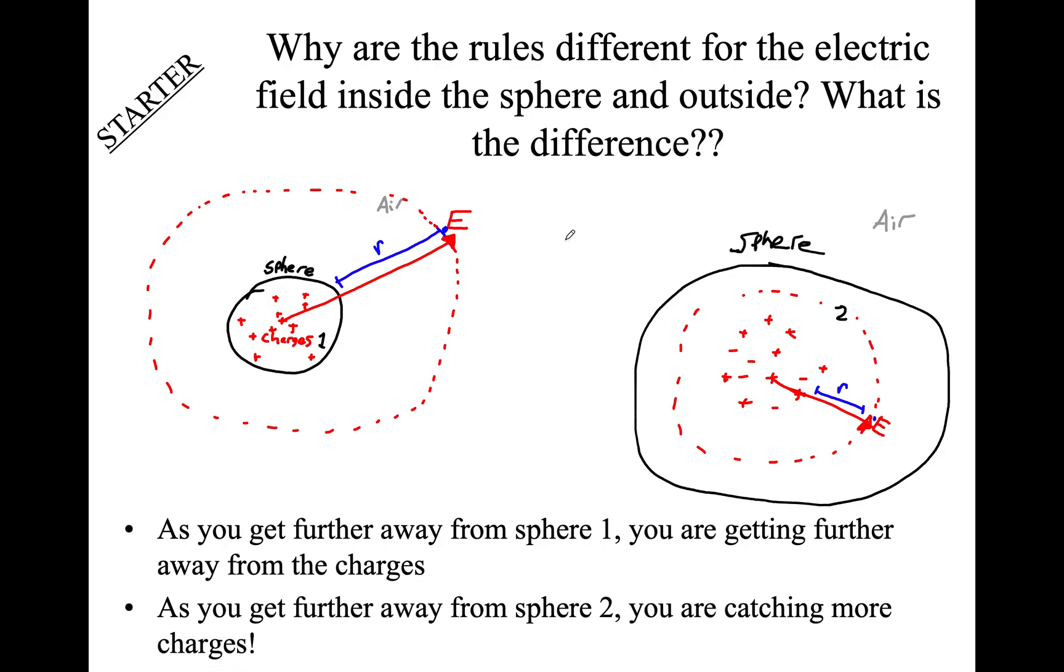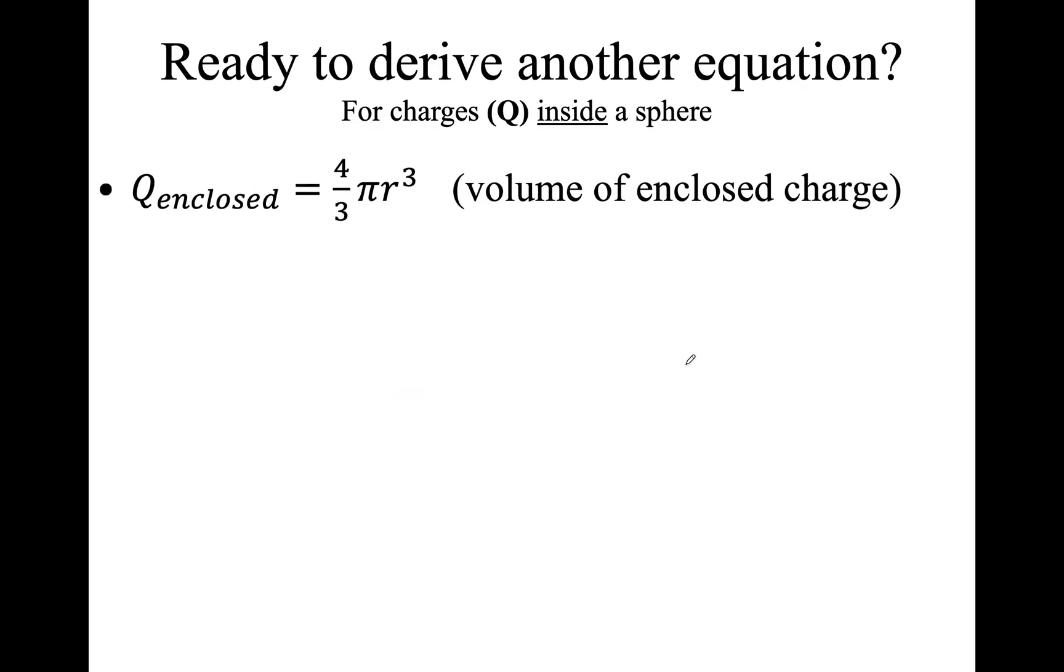Inside it is a little different. Looking at this, what is the difference? Outside we've already agreed as you get further away you're getting away from the charges. Your field will decrease. But if you're inside the sphere, you have charges. You're picking up some charges, for example, this much. If you go further out, you will pick up more charges. So you're catching more charges. There will be more. So let's derive the equation.